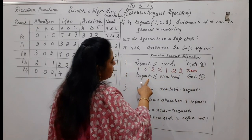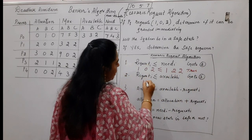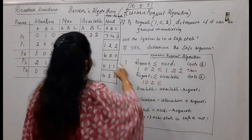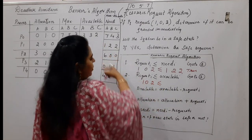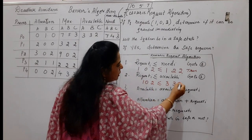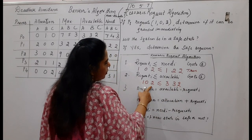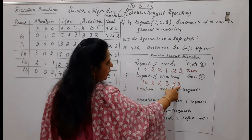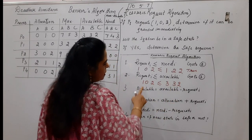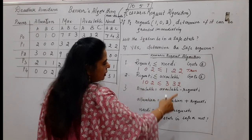Step 2: the request must also be available in the system. System availability is 3,3,2. It checks: you are requesting 1,0,2 and I have 3,3,2 — is it available? Yes, it is true and available.